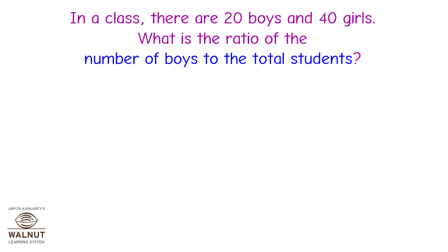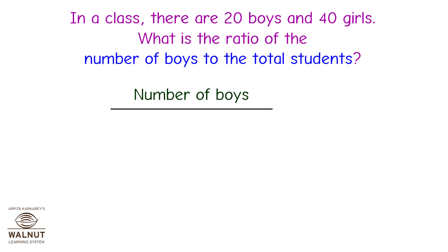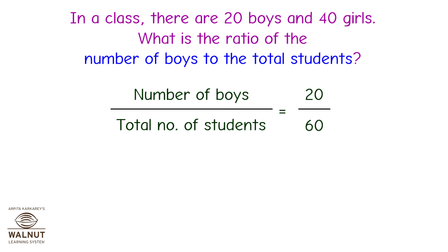In a class, there are 20 boys and 40 girls. What is the ratio of the number of boys to the total students? With the same values, we have to find the ratio of the number of boys to total students. First, we will write the ratio to be found out as a fraction. The fraction is number of boys upon total number of students, that is equal to 20 upon 60.